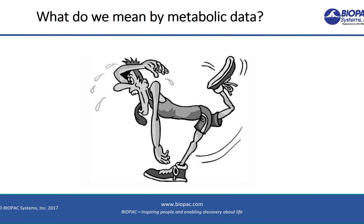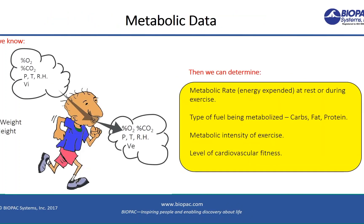So what do we mean by metabolic data? If we know the percentage CO2 and O2 in the inspired and expired gas or air, along with the barometric pressure, temperature, relative humidity, and the volume of inspired and expired air, and if we also know a person's weight and height, then we can determine metabolic rate and a variety of other important measures. Metabolic rate is the energy expended — calories per unit of time at rest and during exercise. If we know how many calories we burn and how many we consume, we have a tool for managing weight. We can determine the type of fuel being metabolized, whether it be carbohydrates or fat — basically the type of diet.